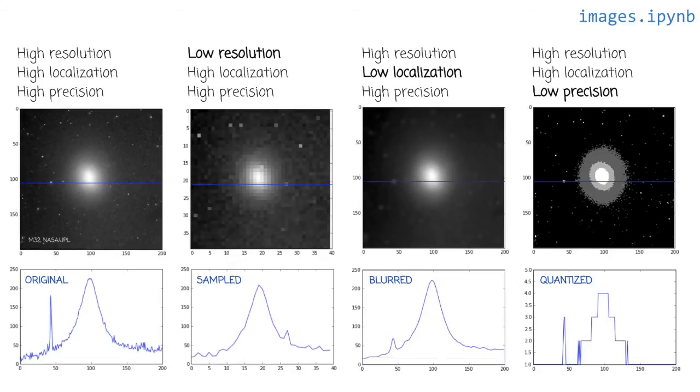Stars are highly localized spatially. So they should be a pinprick essentially in a photograph. But other celestial objects like this galaxy M32 is spread out.